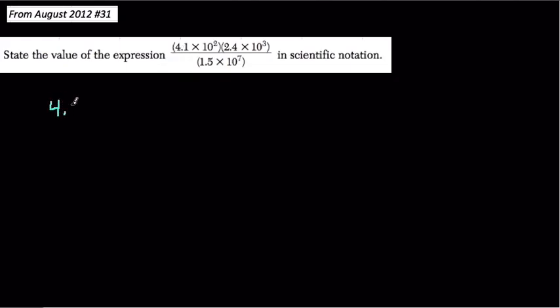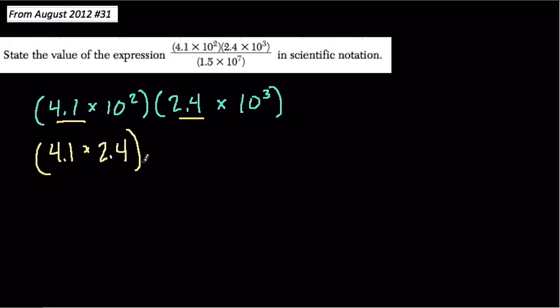We'll look at the numerator first, the top number on the fraction, and that's how I'm going to break this problem down. We have 4.1 times 10 to the second times 2.4 times 10 to the third. Since we're multiplying everything here, we have a lot of flexibility. I can multiply 4.1 times 2.4 first, and then multiply 10 to the second times 10 to the third in any order.